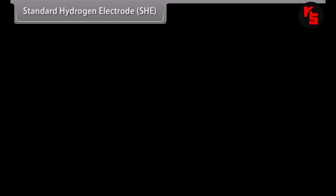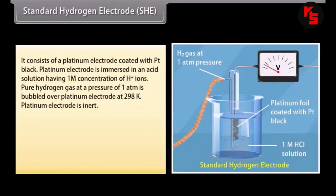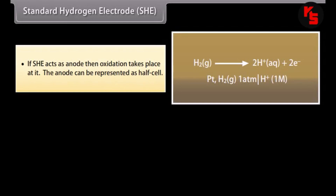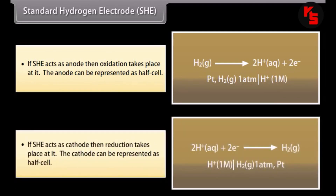Standard Hydrogen Electrode (SHE). It consists of a platinum electrode with platinum black. The platinum electrode is immersed in an acid solution having 1M concentration of hydrogen ions. Pure hydrogen gas at a pressure of one atmosphere is bubbled over the platinum electrode at 298 K. The platinum electrode is inert; the half-reaction takes place at its surface, through which the inflow or outflow of electrons takes place. The hydrogen electrode can act as anode or cathode depending upon the nature of the second electrode with which it is combined. If SHE acts as anode, oxidation takes place at it; if SHE acts as cathode, reduction takes place at it. The electrode potential of the standard hydrogen electrode is taken as zero.